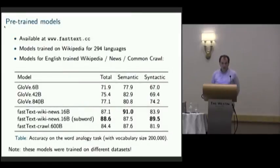We have pre-trained models available online. We have a set of models trained on Wikipedia for almost 300 different languages. We also distribute the subword information, so it's possible to compute word vectors for out-of-vocabulary words using these models. We've also trained models for English on much bigger datasets using Wikipedia, News, and Common Crawl.